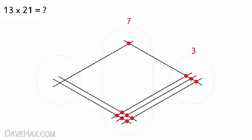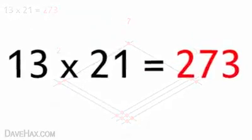Then move on to the last zone and do exactly the same again. 1, 2. 2, 7, 3. And that gives us our answer. 13 times 21 is 273. Pretty cool, huh?